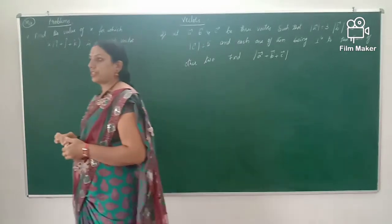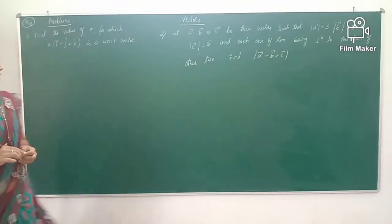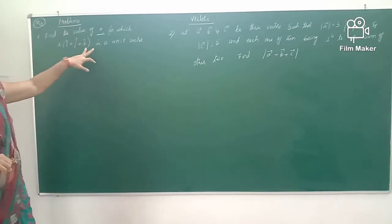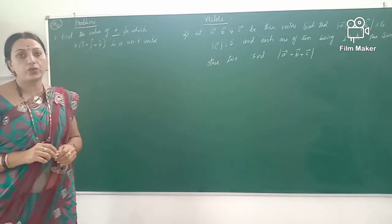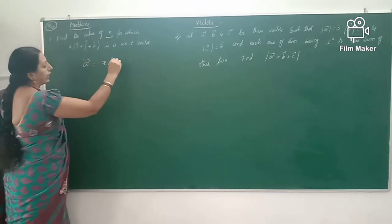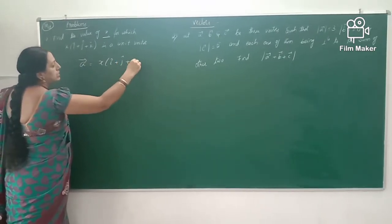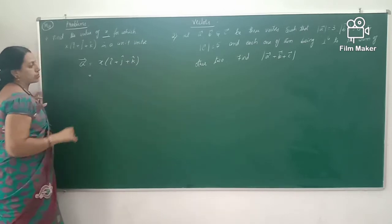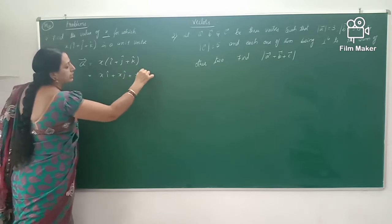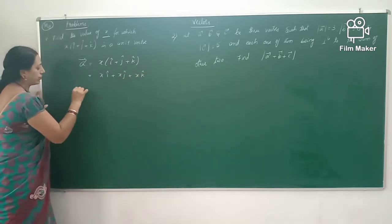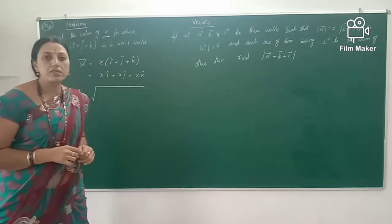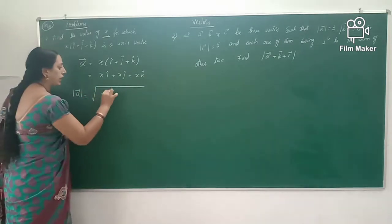Good morning students. Let's continue the discussion. The next problem is: find the value of x for which x into i-cap plus j-cap plus k-cap is one of the unit vectors. So the vector a is noted by x times i-cap plus j-cap plus k-cap, which is also written as x i-cap plus x j-cap plus x k-cap. The magnitude of the vector is square root of x-square plus y-square plus z-square.